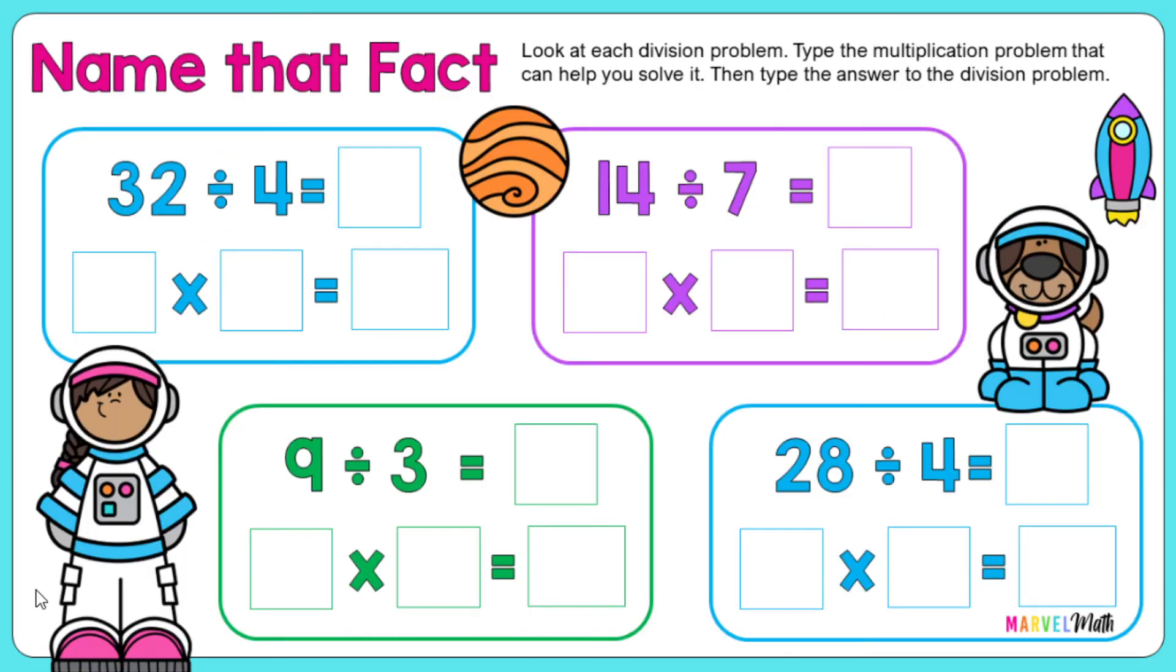And the last type of slide that you have is name that fact. So you're going to look at the division problem, and then you're going to think about what's the related multiplication problem that could help you solve that. So 4 times something equals 32. And that something is 8. 4 times 8 equals 32. So 32 divided by 4 equals 8.